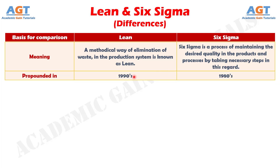Difference Number 2: The Toyota Production System first pioneered Lean Thinking in the 1990s, whereas Six Sigma is a process introduced by Motorola in the 1980s.